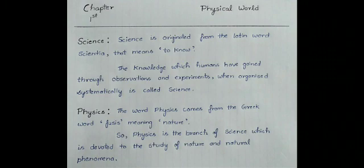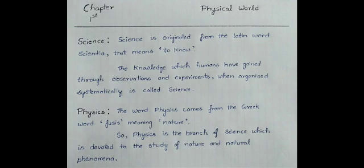Firstly, let us know what is science. Science is originated from the Latin word 'scientia' that means to know. The knowledge which humans have gained through observations and experiments, when organized systematically, is called science.